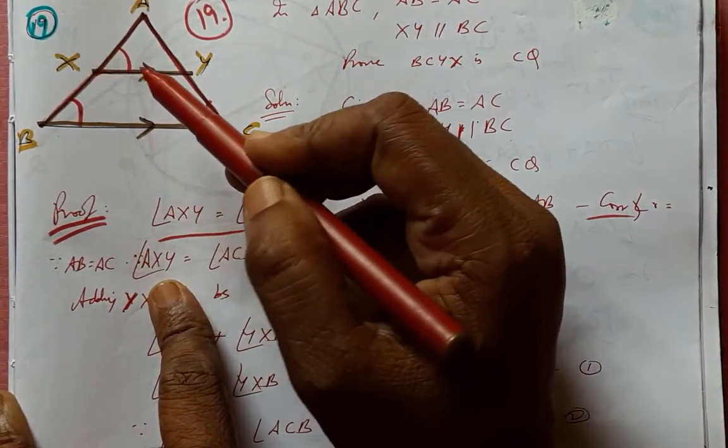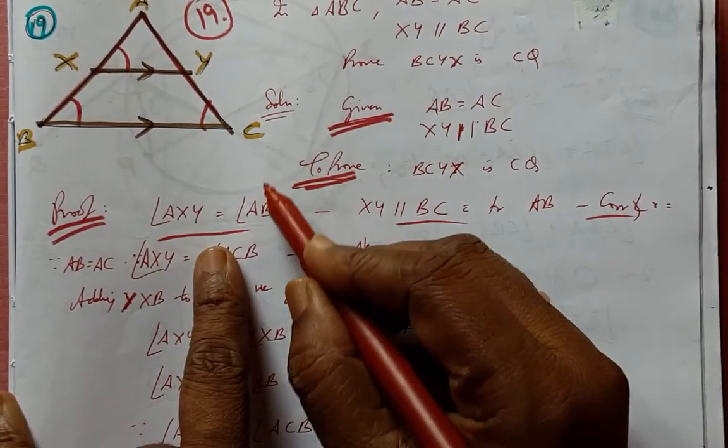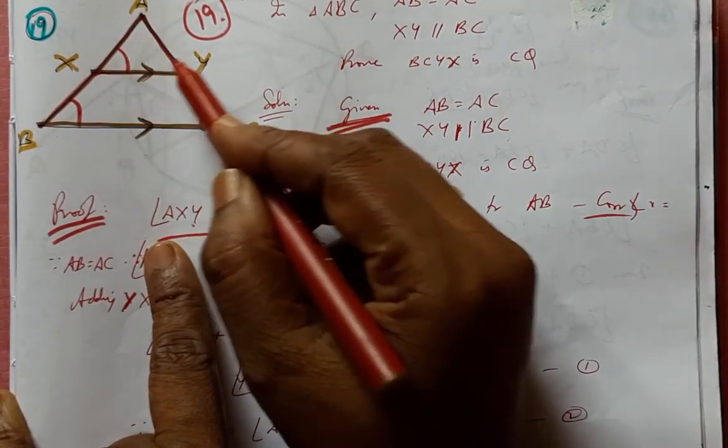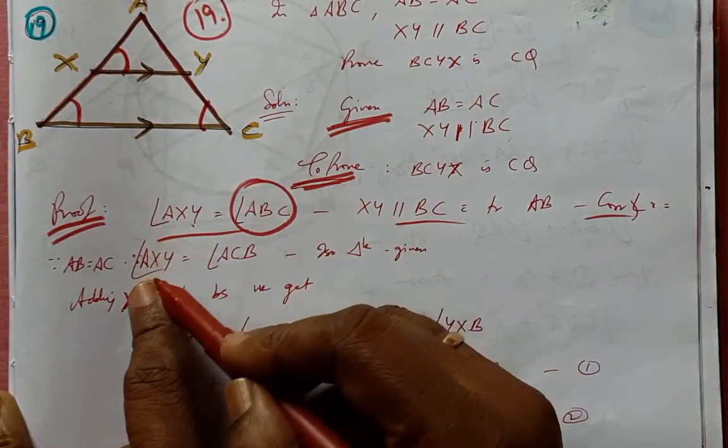Angle ABC is equal to angle ACB, but ABC is also equal to AXY, therefore we can say that these two are also equal, therefore AXY is equal to ACB.